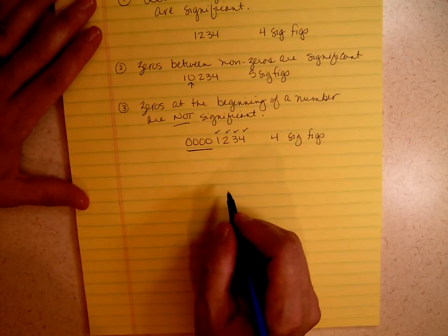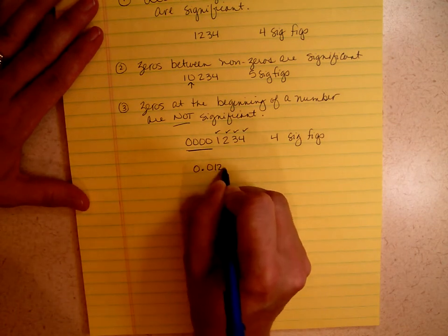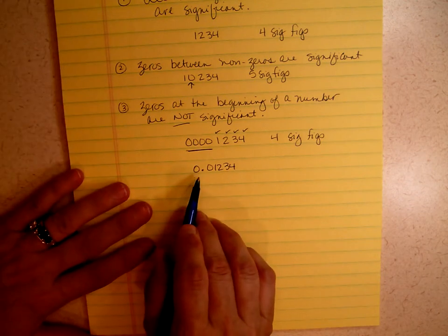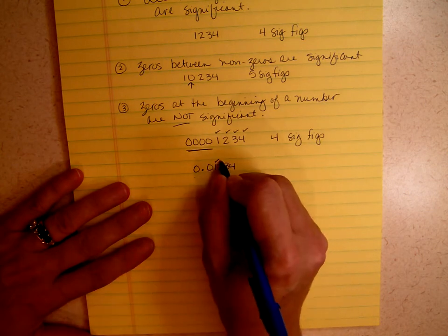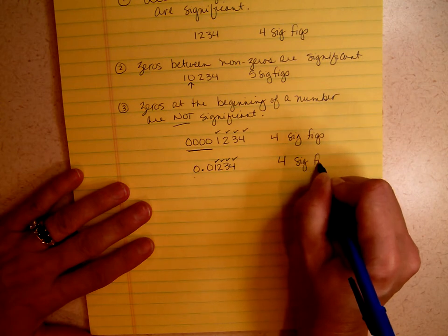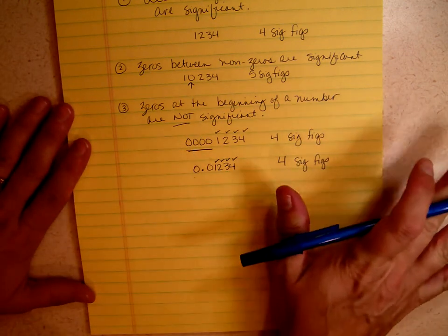What confuses students frequently is when you have 0.01234. Don't worry about the decimal at this point. If the zeros are at the beginning of a number, they are not significant. This number has 1, 2, 3, 4 sig figs. And that's that. If they're at the beginning, they are not significant.